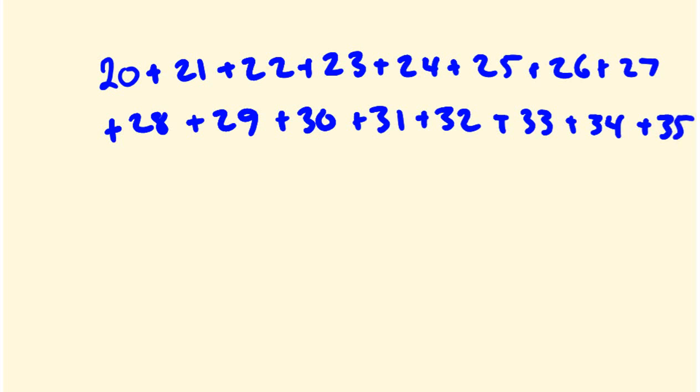20 plus 21 plus 22 plus 23 plus 24 plus 25 plus 26 plus 27 plus 28 plus 29 plus 30 plus 31 plus 32 plus 33 plus 34 plus 35. We're going to add all these together. So first off, we add the first and the last numbers together. 35 plus 20. The answer to that is 55. And we're going to get the average of these two. So we're dividing it by 2. It's 55 divided by 2 equals 27 and a half.